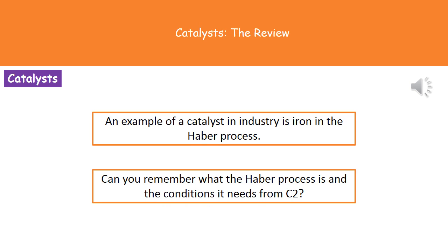One example of where we've seen a catalyst used is in our C2 topic from Core Science, where we looked at the Haber process. That's how we make ammonia, and what we use there is an iron catalyst to speed up the rate of that reaction. It would be good to have a look back at the Haber process and see if you can remember the different conditions, other than the iron catalyst, that it needs to work.